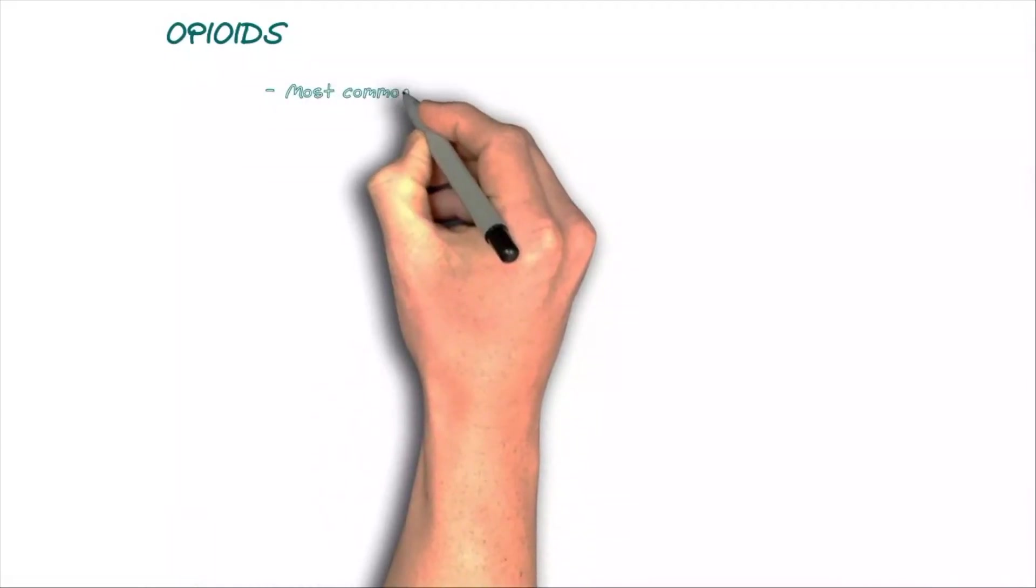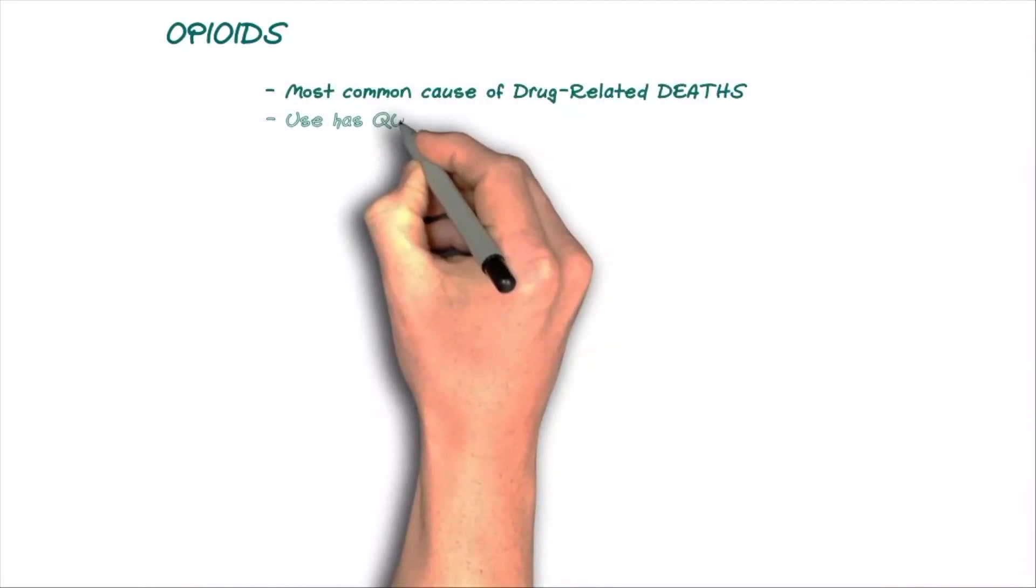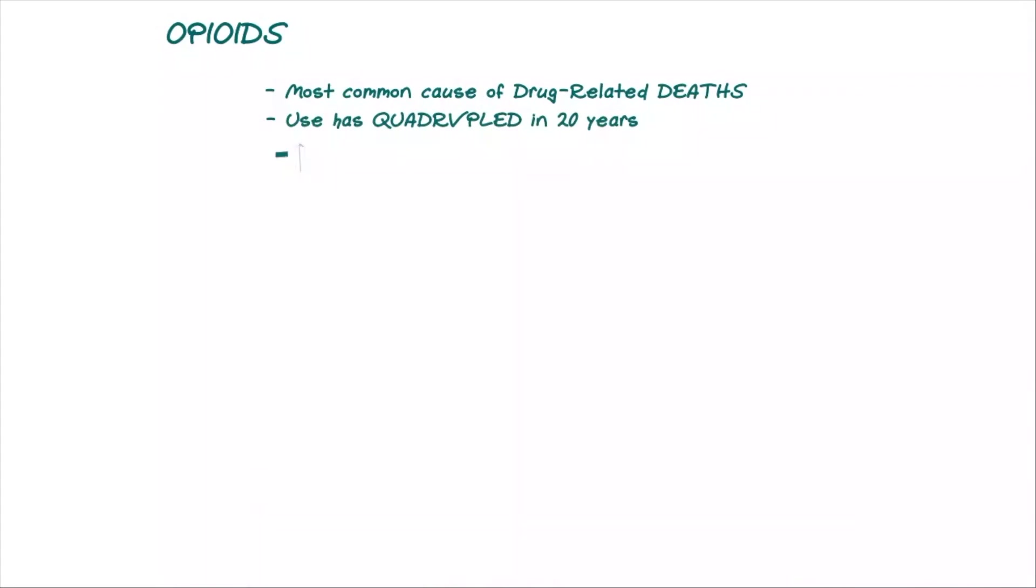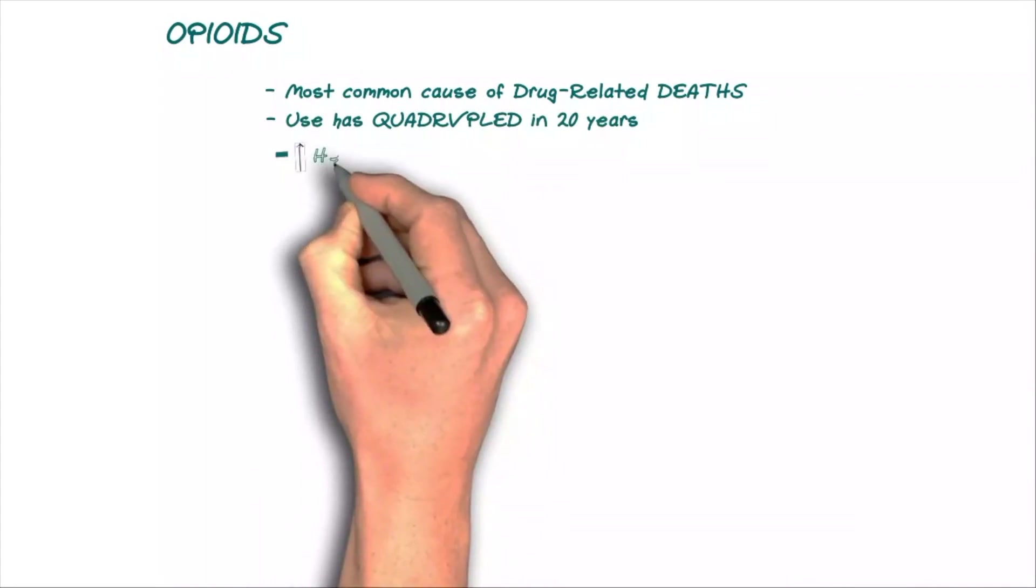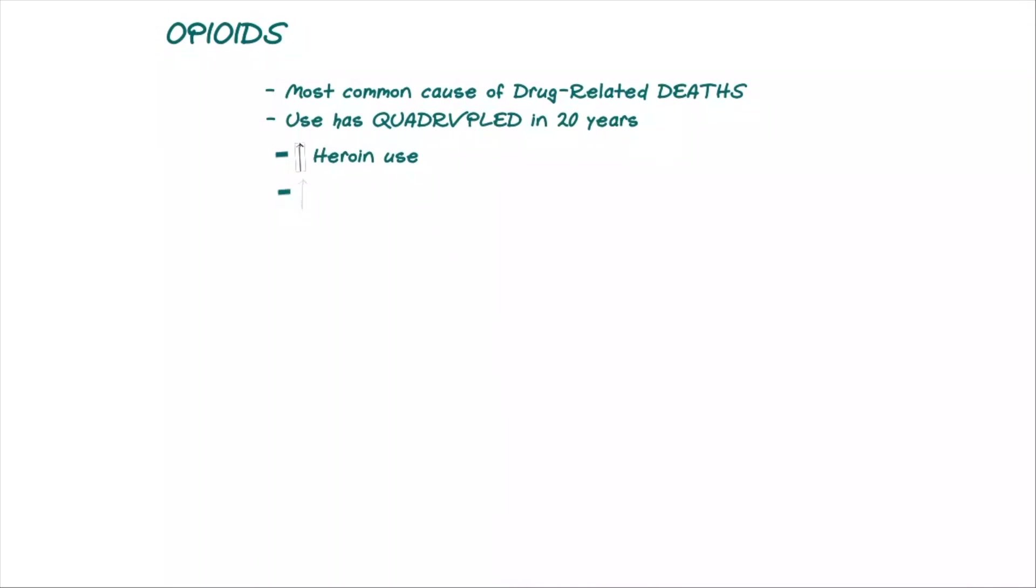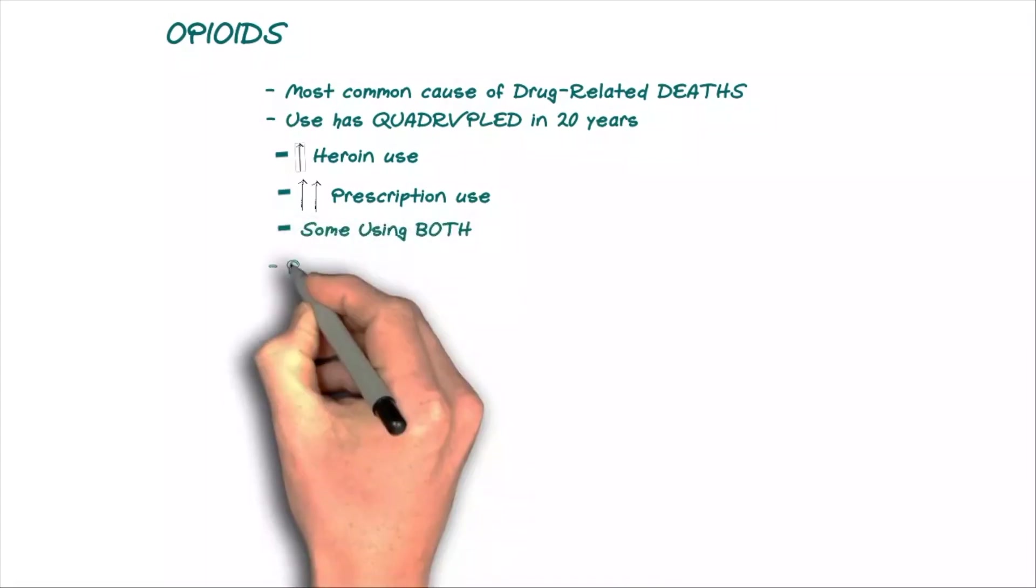Worldwide, opioids are the most common cause of drug-related deaths. The number of individuals abusing them has quadrupled in the last 20 years, with an uptick in heroin use, an even bigger uptake in prescription opioid use, and a large group of folks abusing both. Because of their potential for addiction and overdose, opioids are regulated substances in a lot of countries.